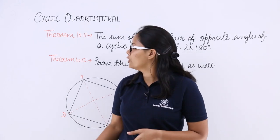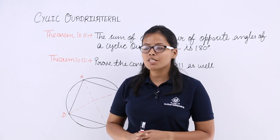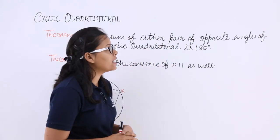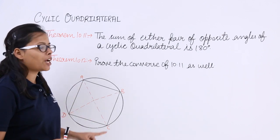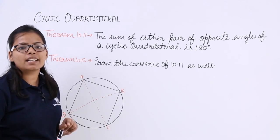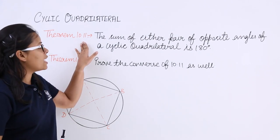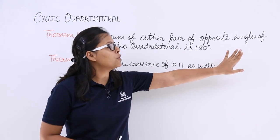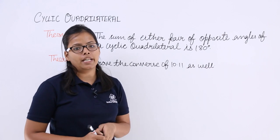Hello guys, let's discuss theorem 10.11 and 10.12 based on cyclic quadrilateral. A cyclic quadrilateral means the four points of a quadrilateral lie on a circle. Theorem 10.11 says the sum of either pair of opposite angles of a cyclic quadrilateral is 180 degrees.